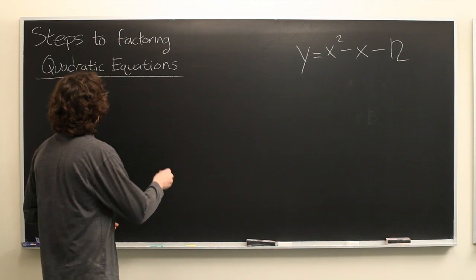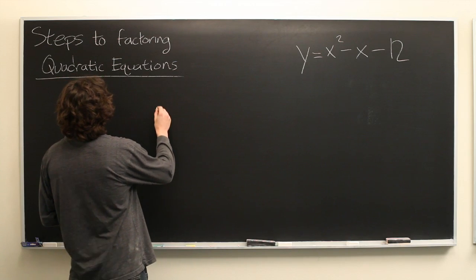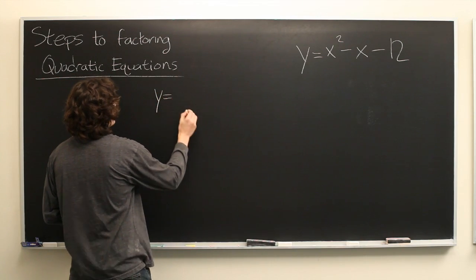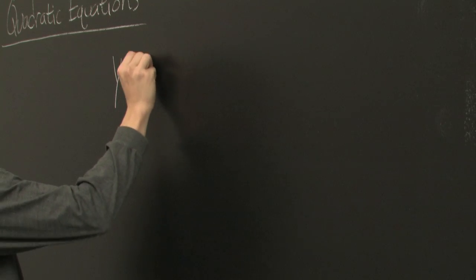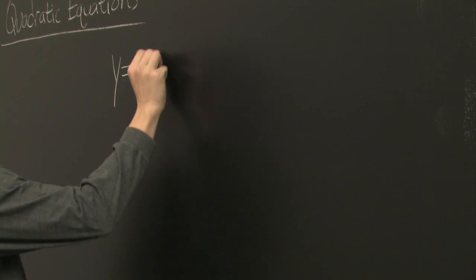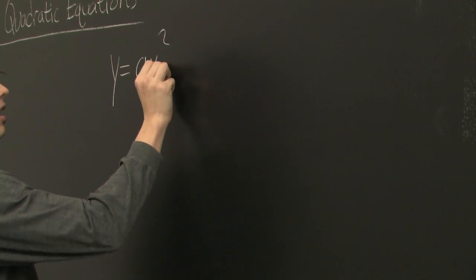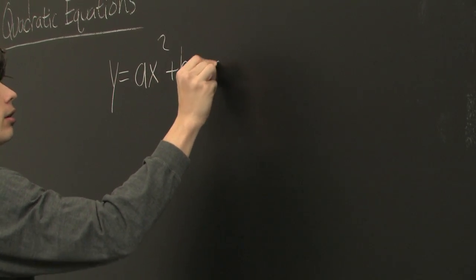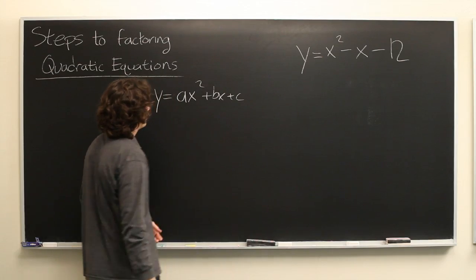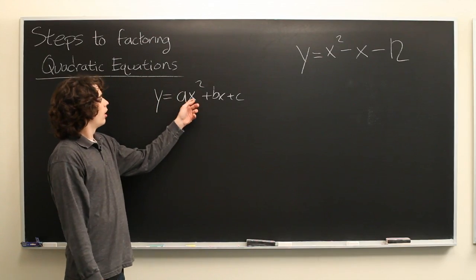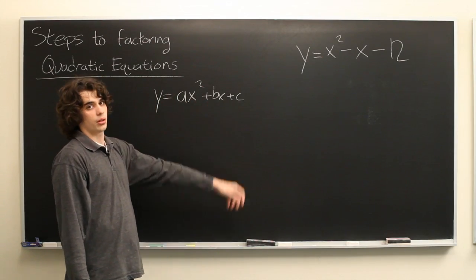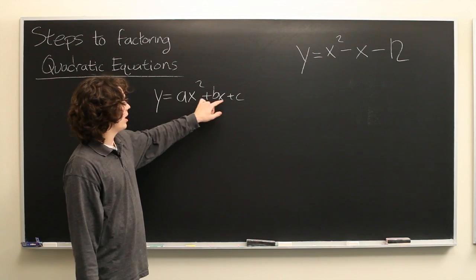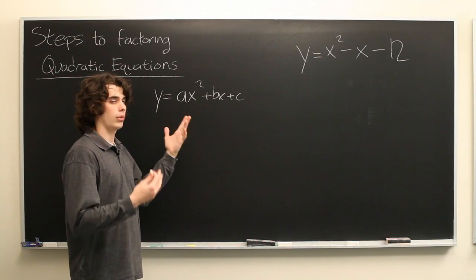As a brief reminder, a quadratic equation is one that looks like this: y equals ax squared plus bx plus c, where x is our variable and a, b, and c are constants.